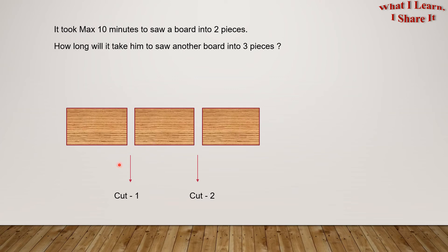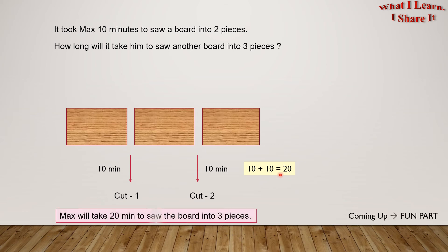Max took 10 minutes to cut the board into two pieces. Or we could say, to make one cut. So, he will take 10 minutes again to make the second cut. So, the total time taken will be 10 plus 10 equals 20 minutes. So, Max will take 20 minutes to cut the board into three pieces.